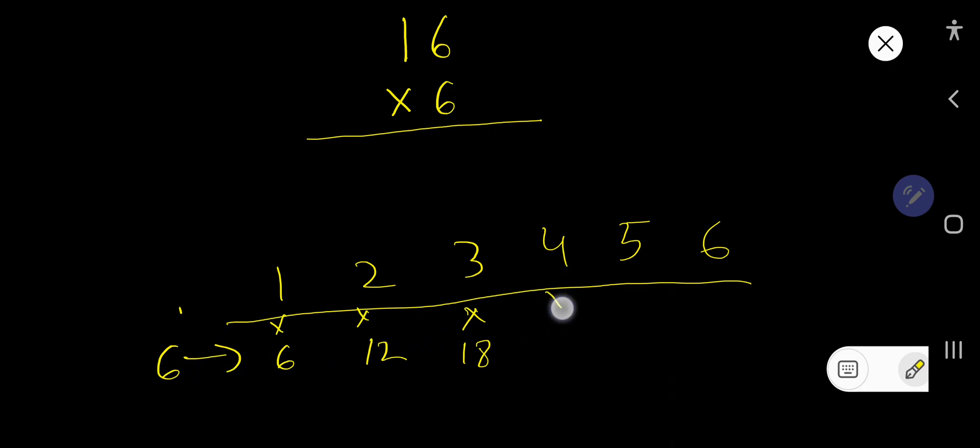Then 6 times 4, 6 times 4 equal to what? Just add 6, then what we are getting? Look, 14, right. Write 4, carry 1. So 1 plus 1, 2, 24. So 6 times 4, 24.